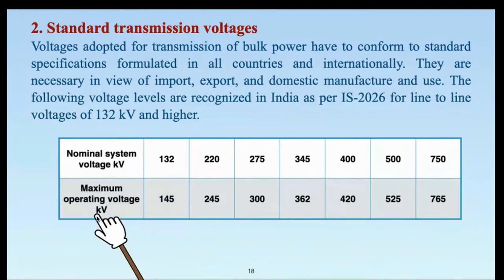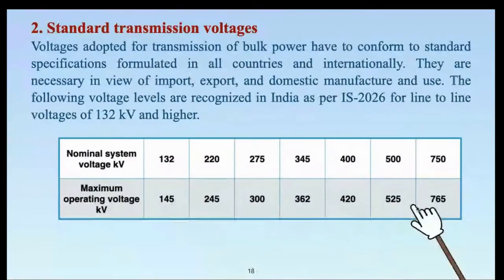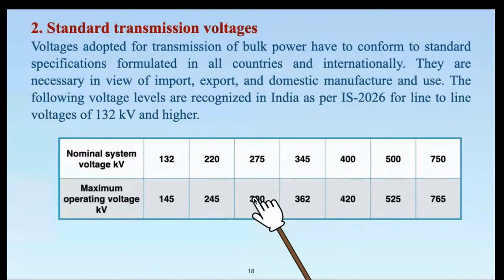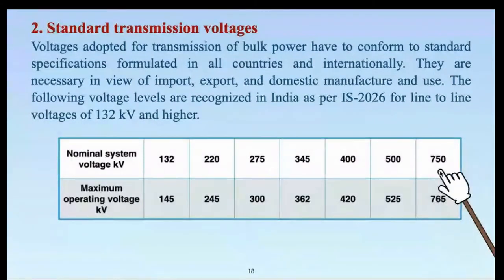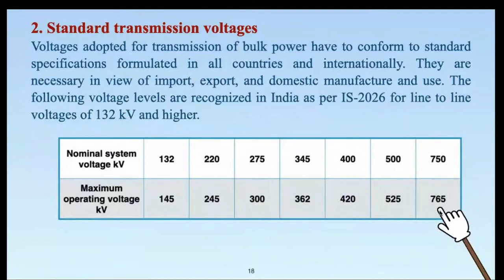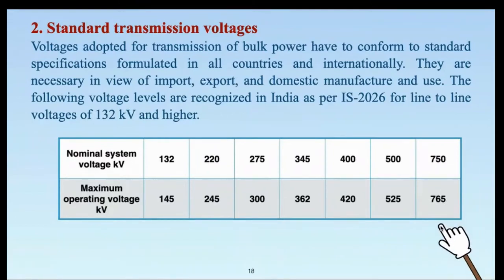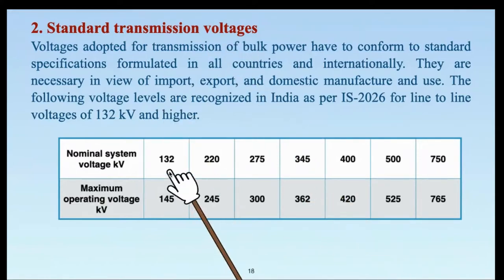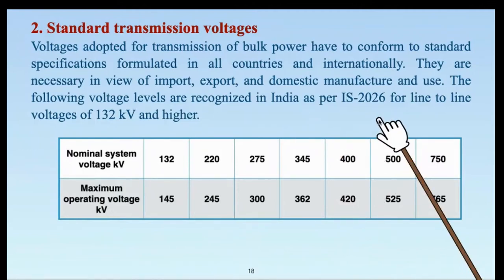This is because as the voltage level increases, the maximum operating voltage decides the level of insulation required. As we move higher, the cost of insulation is directly proportional to the cube of voltage — if we double the voltage, the cost of insulation may rise by eight times. That is why at higher voltage levels we cannot keep a very high margin for insulation; we can have only a marginal increase because the cost is prohibitive. At higher voltage levels, switching overvoltages are of prime importance and they govern the insulation coordination. These are the standard transmission voltages followed in India as per IS 2026.